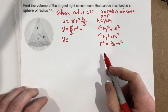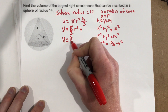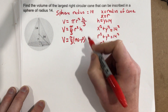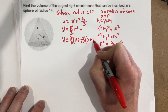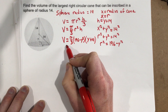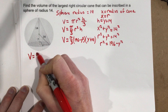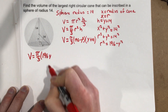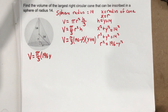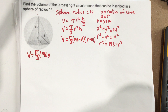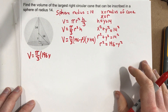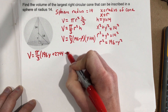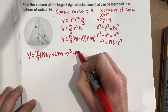Plugging in r² = 196 − y² and h = y + 14, we get V = (π/3)(196 − y²)(y + 14). Distributing: 196 times y gives 196y, 196 times 14 gives 2,744, negative y² times y gives −y³, and negative y² times 14 gives −14y².